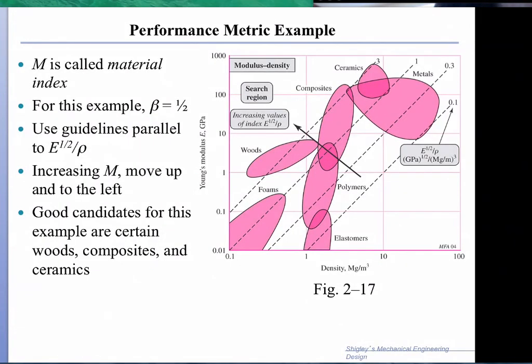If we take a section of the material selection diagram, we will find that we have to plot different straight lines, and the straight lines should be parallel, and they have the ratio of E to the 1/2 over rho to be constant. So this ratio here is 0.1, 0.3, 1, and so on. We're trying to find the best combination material for which this line passes. For E to the 1/2 of rho equals 3, it will pass through wood and it will pass through some composites and some ceramics.